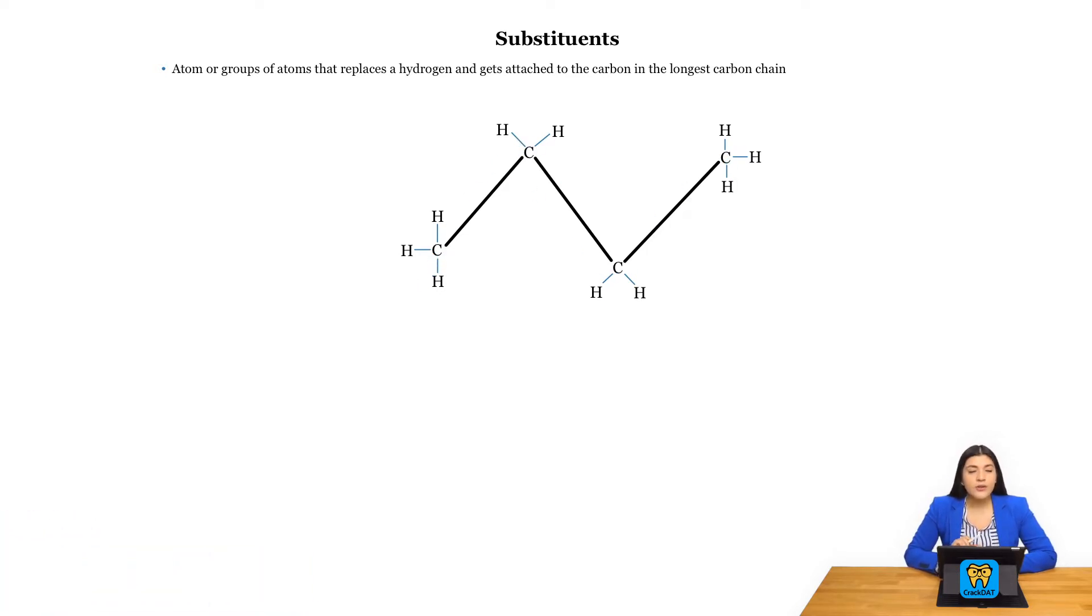And what we're looking at with substituents, it's typically whatever is sticking out of that major carbon chain. So we define substituents as an atom or groups of atoms that replaces a hydrogen and gets attached to the carbon on the longest carbon chain.